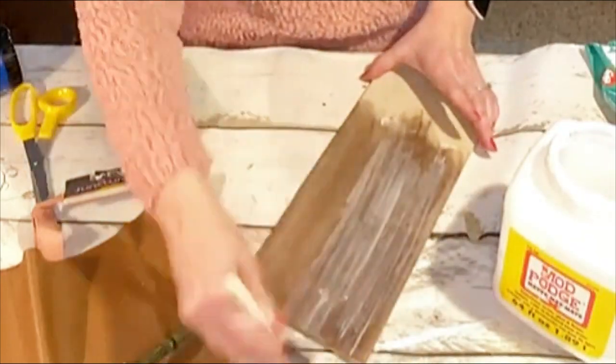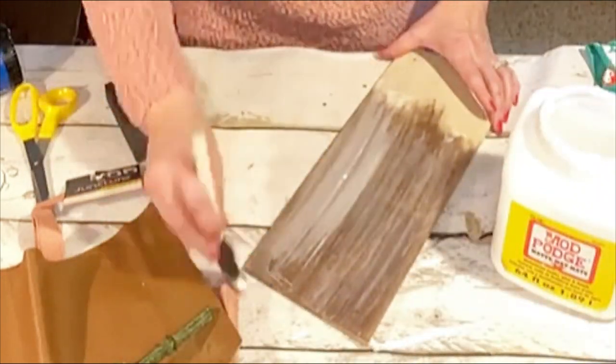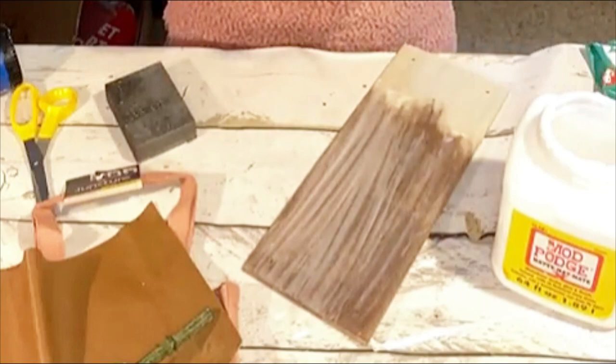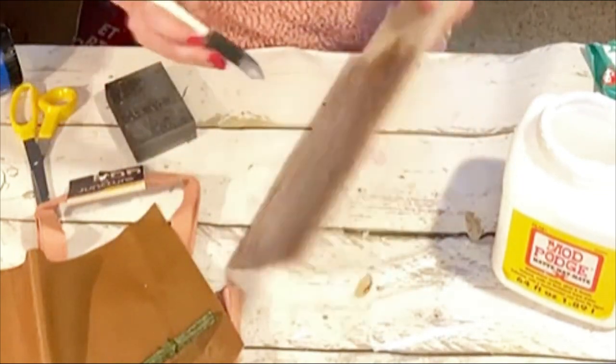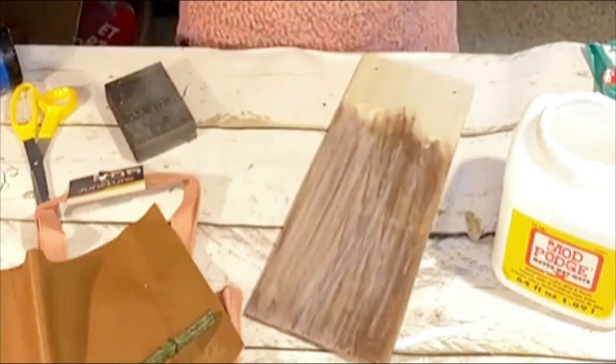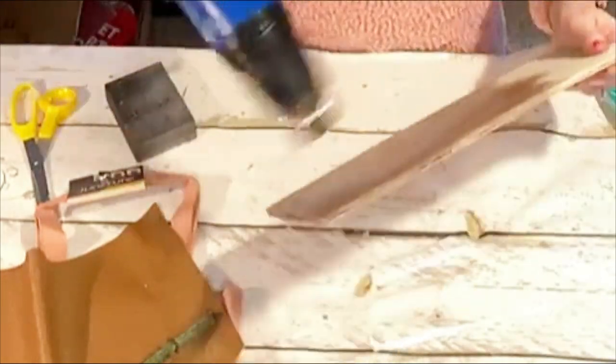And then I'm going to seal it with a coat of Mod Podge, just to give it a little bit of sheen and make it look a little bit more finished. You could also use a polyurethane, or whatever you have will do.